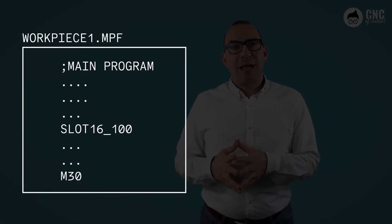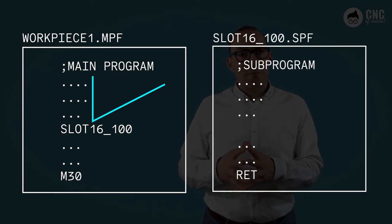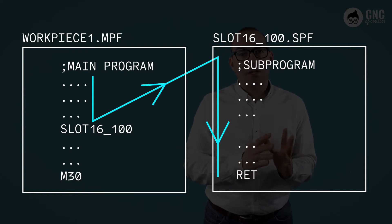A subprogram is basically a program that is called up by a main program. They are used in various cases. For example, to call up programs created using the CAM, or to repeat machining operations common to several pieces. To be clearer, the sequence is as follows. There is a main program, for example, workpiece1.mpf. Within this program, there is a call to an external subprogram, which in this case I have called slot16 underscore 100. When the control arrives at the subprogram call, it searches for the subprogram according to a specific procedure and executes it until it finds the subprogram end function, M17, or RET. At that point, the control returns to the main program and continues from the line following the subprogram call.